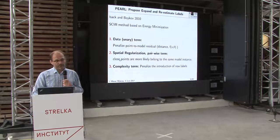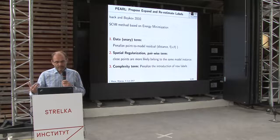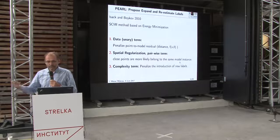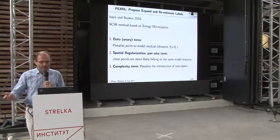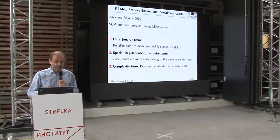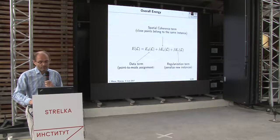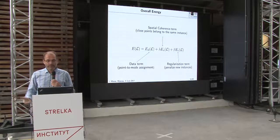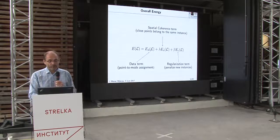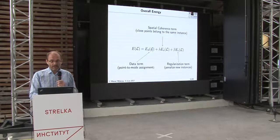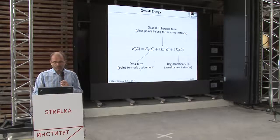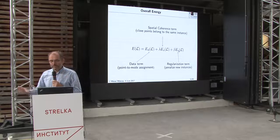Boikov in 2010 introduced a method for single-class multiple-instance fitting as an energy minimization problem. Besides the unary term — how well a point fits an instance — they added a spatial regularization pairwise term encoding that close points are likely to belong to the same model instance. The same applies to outliers. They also added a third energy term penalizing introduction of new labels, effectively controlling model complexity.